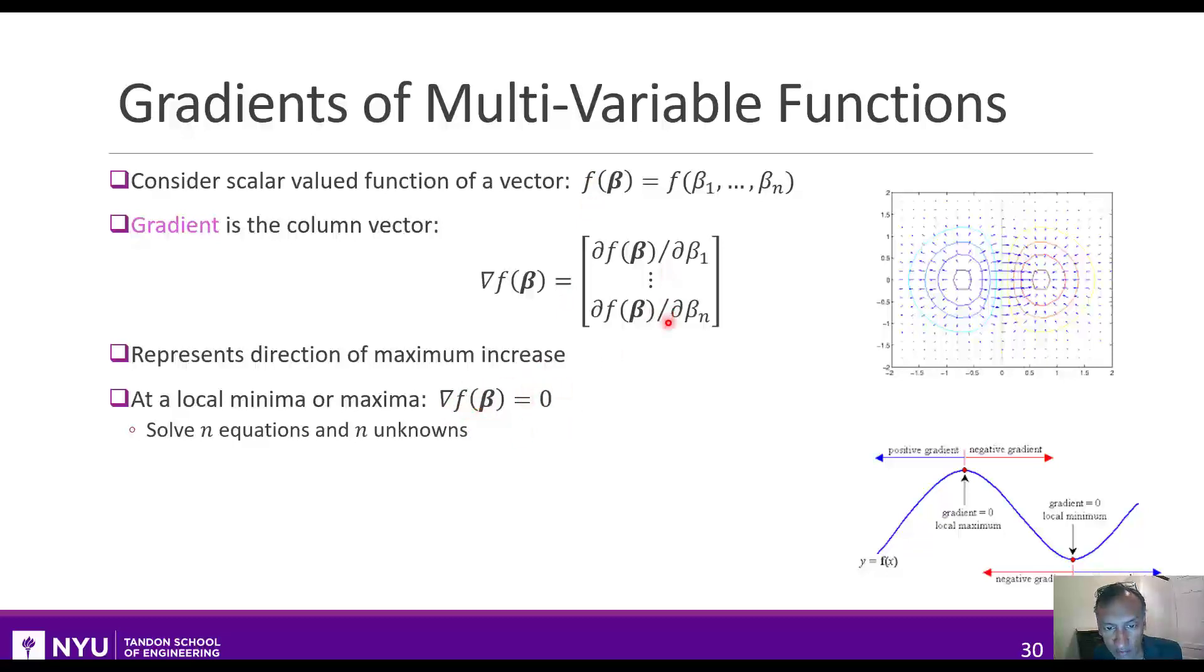You'll have to solve for n values of beta, and you'll get n equations. So you solve n equations and n unknowns.